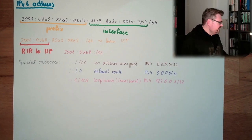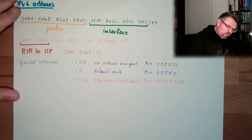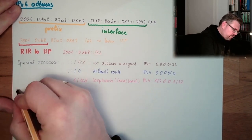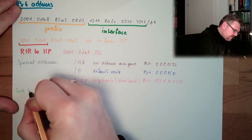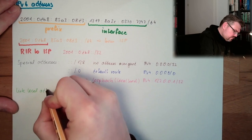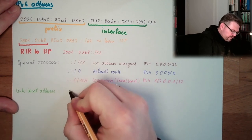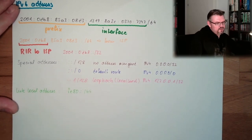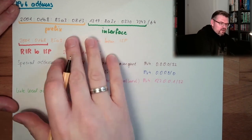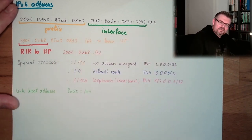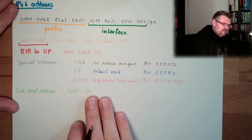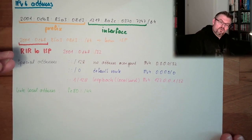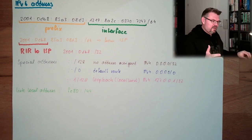There are also link-local addresses. If we want to talk only to somebody inside our local network portion, we can use a link-local address. This starts with fe80 and then zeros for 44 bits, after which you place your interface ID. It will not be routed by the router — it stays just inside our local network portion.